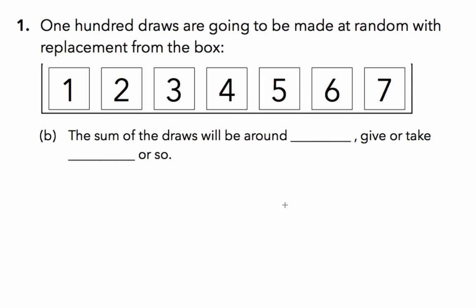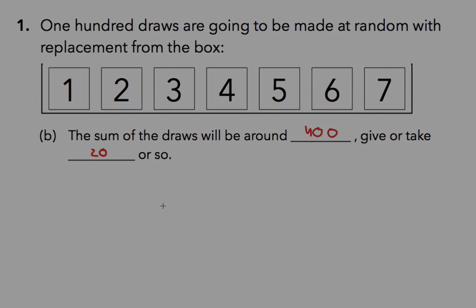Part B asks you to put these values in a plain English context. The sum of 100 random draws from this box will be around 400, give or take 20 or so. We expect to be off a little bit, and the standard error suggests the sum of any one set of 100 draws will be between 380 and 420.